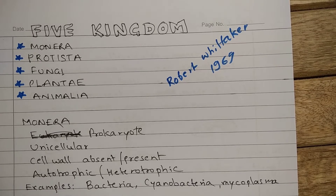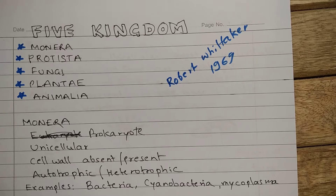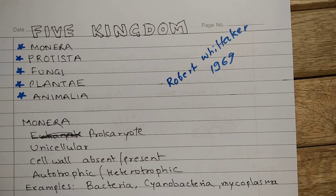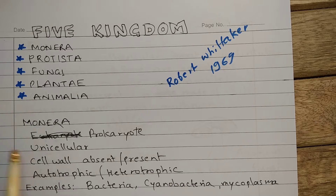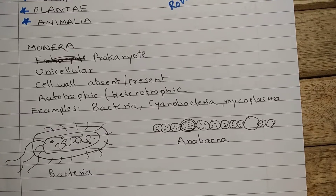Hi, this is Ajay Anand and welcome to science classes from excelup.com. In this lesson you will learn about the five kingdom classification. This system was proposed by Robert Whittaker in 1969 and this is the most accepted system of classification. The five kingdoms according to Robert Whittaker are Monera, Protista, Fungi, Plantae, and Animalia. Let us begin with Monera.